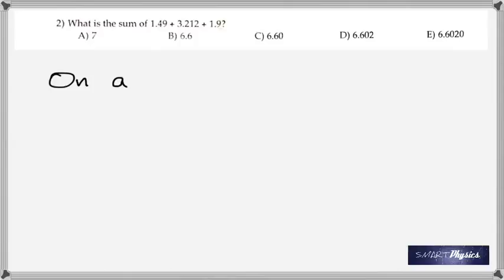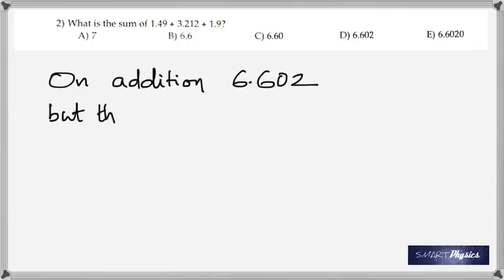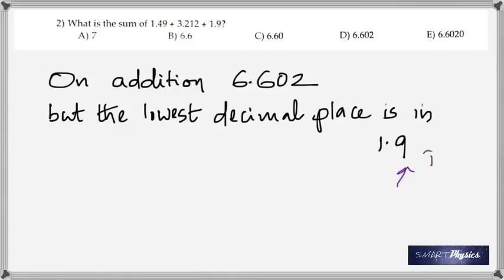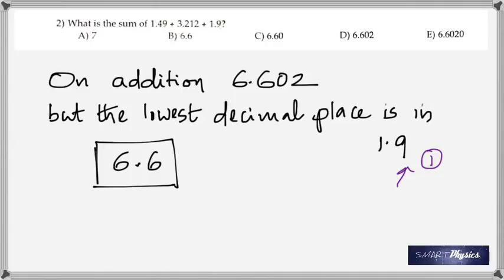What's the sum of these three numbers? When you add or subtract, you look at the minimum number of decimal places. 1.9 has only one decimal place — just the digit 9 after the decimal — therefore the answer should only have one digit after the decimal. Although you get 16.602, you round it off to 16.6, because that's the lowest precision, set by 1.9.